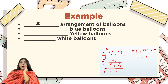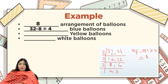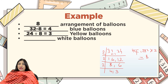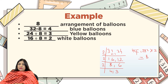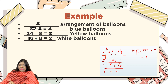Now I find how many of each balloon per arrangement. Blue balloons: 32 ÷ 8 = 4, so 4 blue balloons per arrangement. Yellow balloons: 24 ÷ 8 = 3, so 3 yellow balloons per arrangement. White balloons: 16 ÷ 8 = 2, so 2 white balloons per arrangement. So each arrangement has 4 blue, 3 yellow, and 2 white balloons. Remember: if the question says 'greatest,' you have to find HCF.